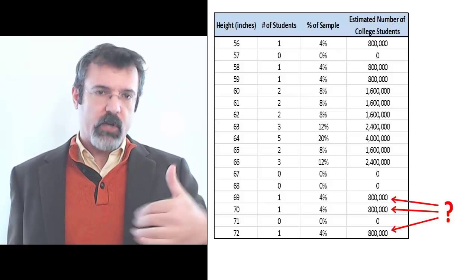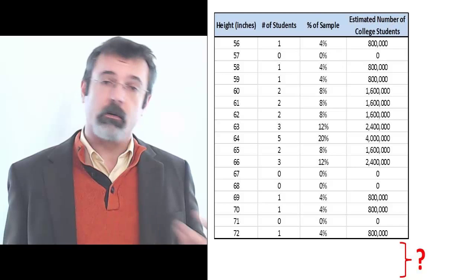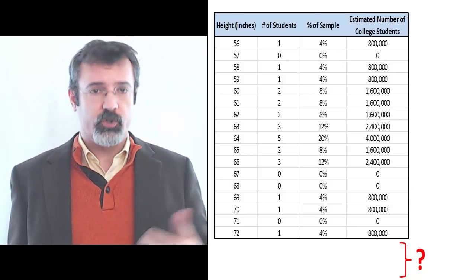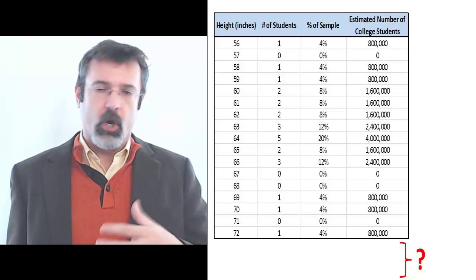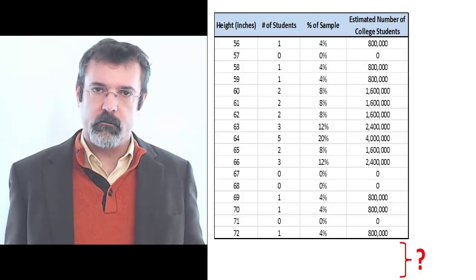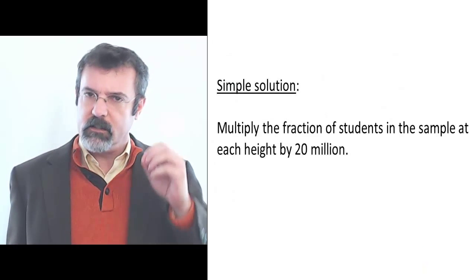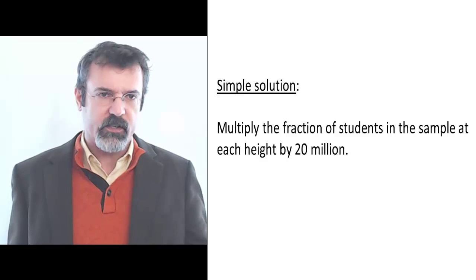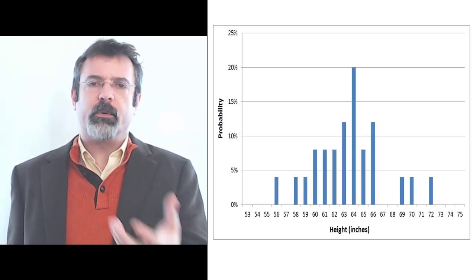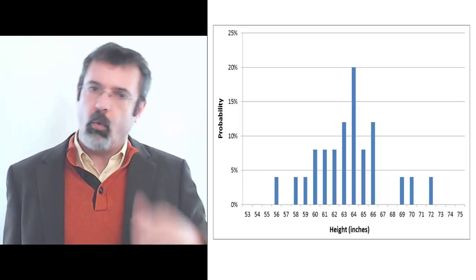Also, our sample stops at 72 inches. Certainly there are college students who are taller than 72 inches, and there are also college students who are shorter than 56 inches. But no one in our sample was taller than 72 or shorter than 56. So this simple approach we use to estimate the number of college students of various heights starts to break down if our sample is not representative of the numbers of students nationwide at each height.